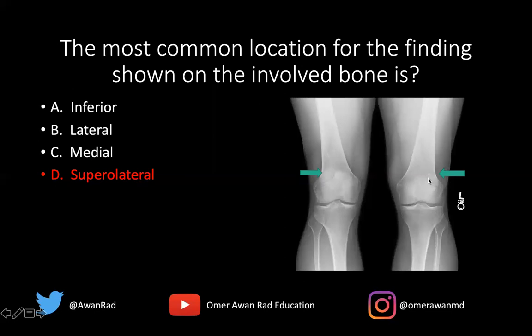This is actually a bilateral finding in this case. It's not always bilateral, but it can be bilateral. This is just a normal variant that we see. Sometimes it's confused for a fracture. This is a nice example of what a bipartite patella is. The core exam often tests normal variants, so this is a very important one for all of us to know and understand.